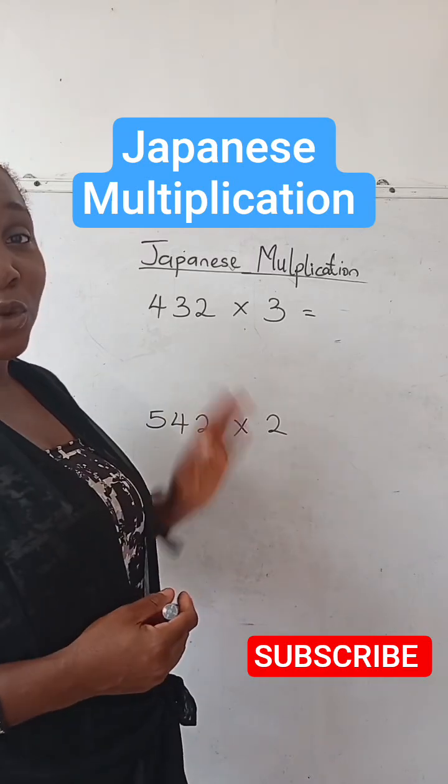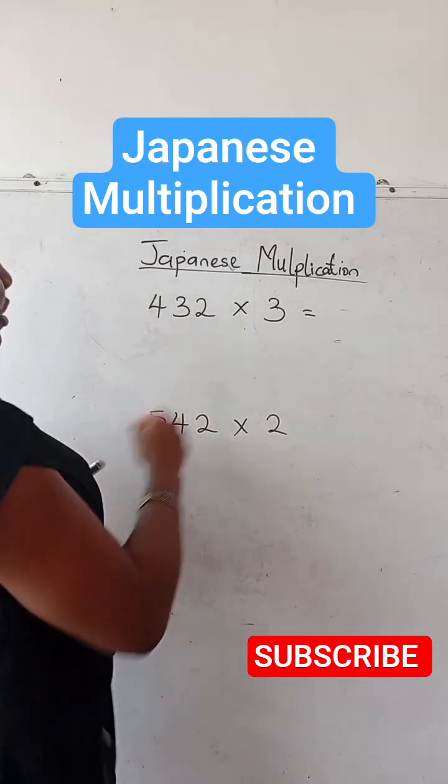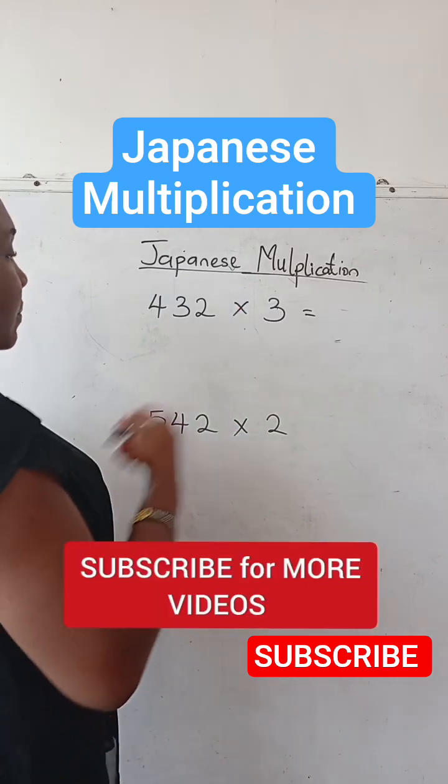Let's learn to multiply these numbers using this particular system. Okay, 432 times 3.